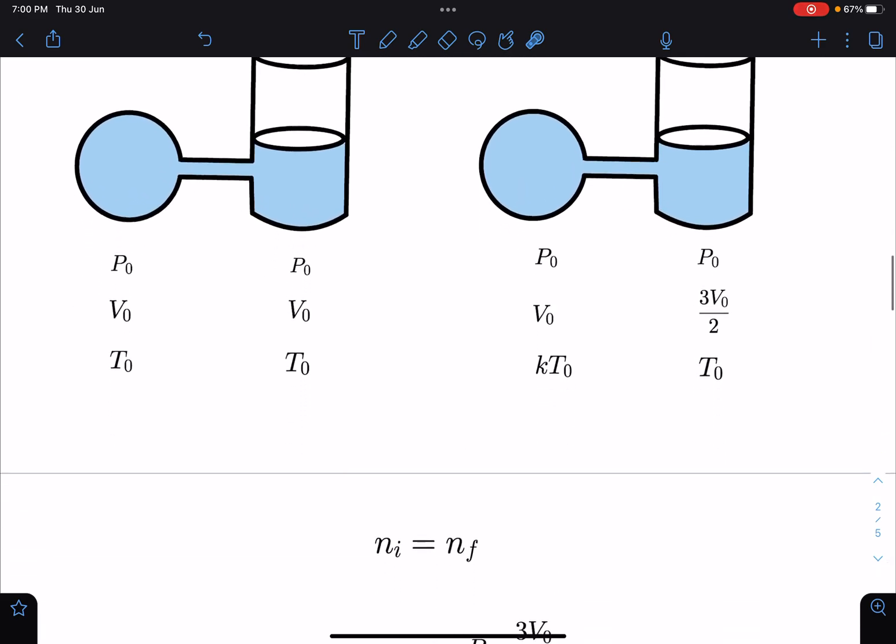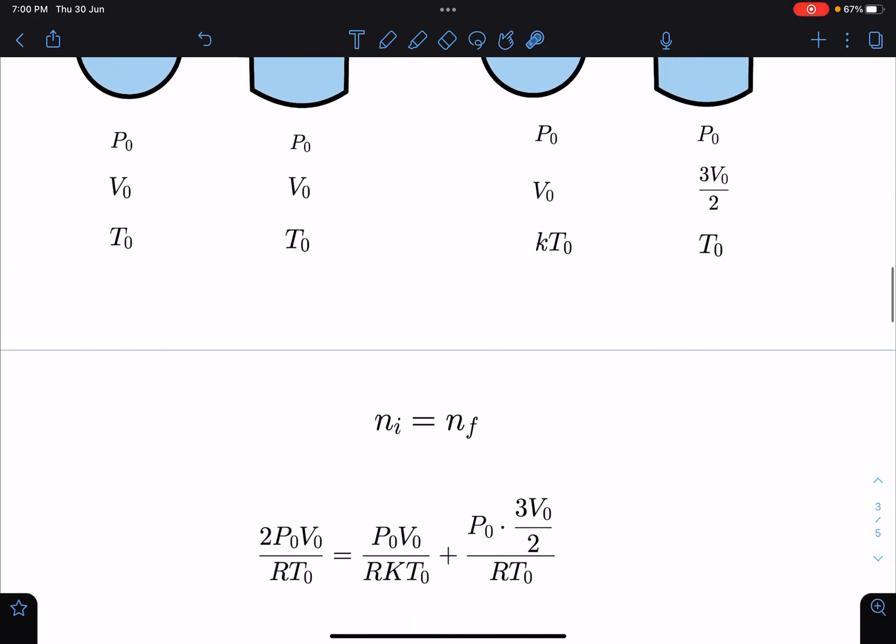So initially you can say P₀V₀ by RT₀ plus P₀V₀ by RT₀, so 2P₀V₀ by RT₀. And finally, in this part, P₀V₀ by RKT₀ and P₀ into 3V₀ by 2 by RT₀.